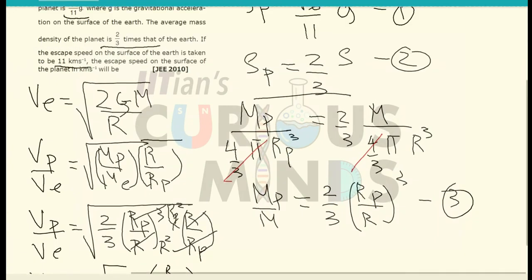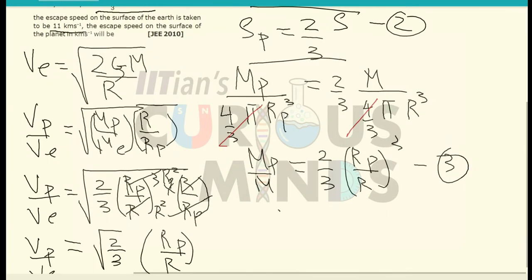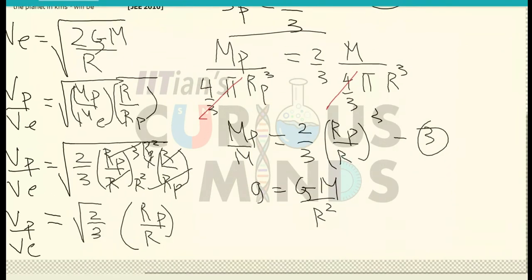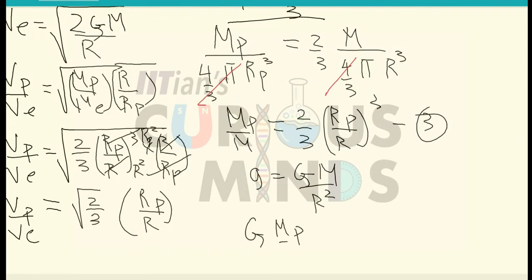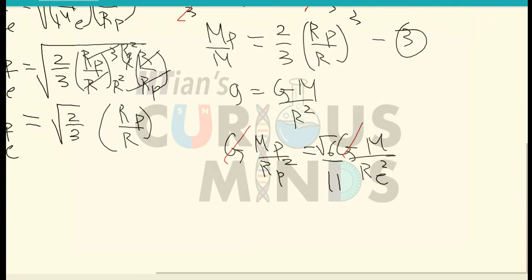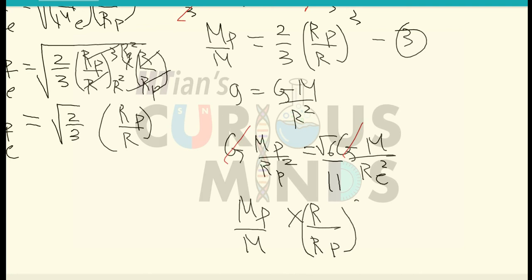To find rp/r, we use the formula for acceleration due to gravity: g = GM/r². The acceleration due to gravity on the planet divided by that on the earth gives (mp/me) × (re/rp)² = √6/11. Substituting mp/me = (2/3)(rp/r)³ into this expression, G cancels out.